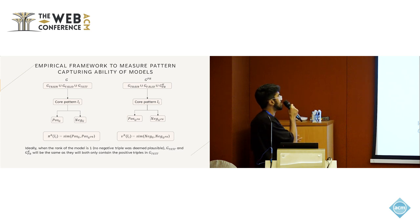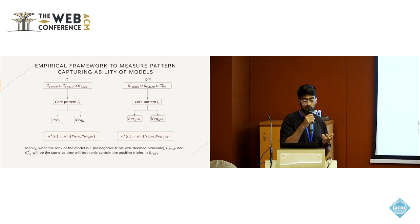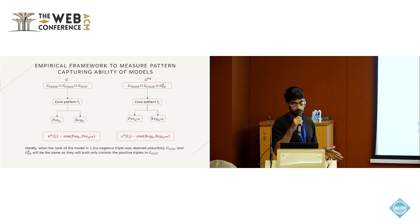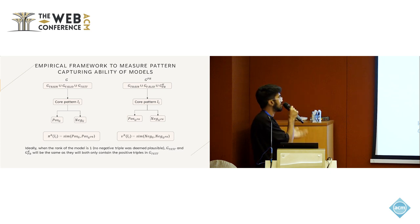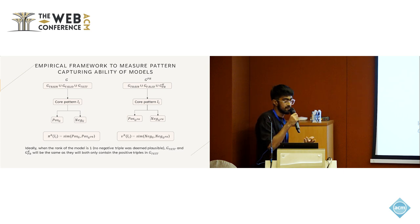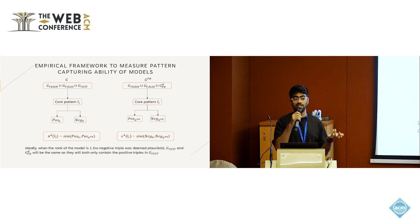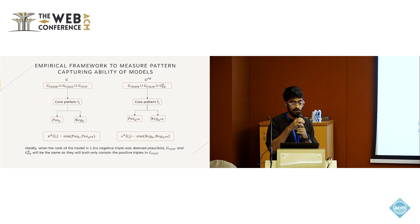What we want to see is a similarity higher or equal to one, meaning the model captures the inference pattern, or zero, meaning it does not. Ideally, when the model's rank is one — meaning no negative triple was deemed plausible — G_test and G_PR will be the same, so the similarity will be one. That is what we expect to see for a highly accurate embedding model.